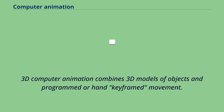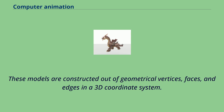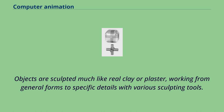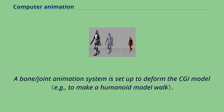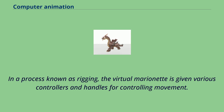3D computer animation combines 3D models of objects and programmed or hand-keyframed movement. These models are constructed out of geometrical vertices, faces, and edges in a 3D coordinate system. Objects are sculpted much like real clay or plaster, working from general forms to specific details with various sculpting tools. Unless a 3D model is intended to be a solid color, it must be painted with textures for realism. A bone/joint animation system is set up to deform the CGI model, and in a process known as rigging, the virtual marionette is given various controllers and handles for controlling movement.